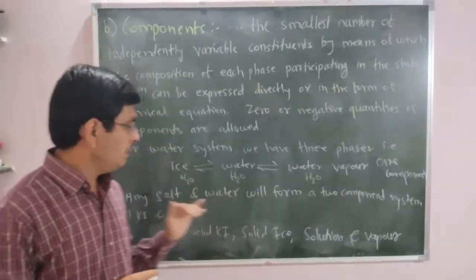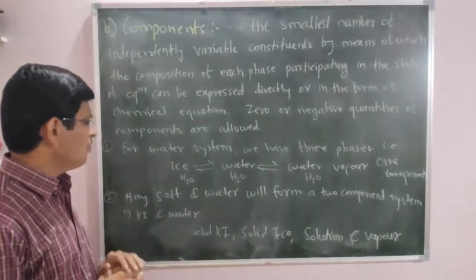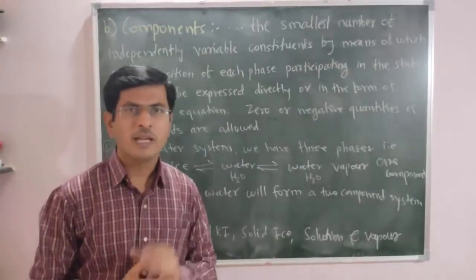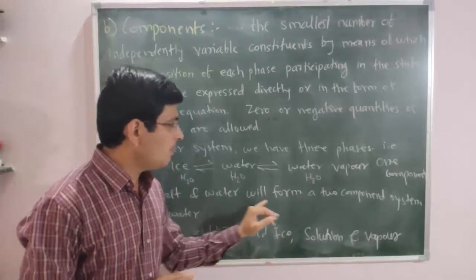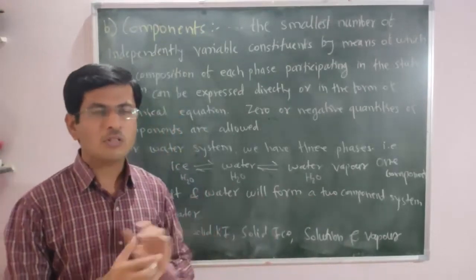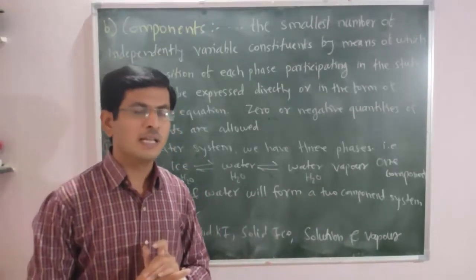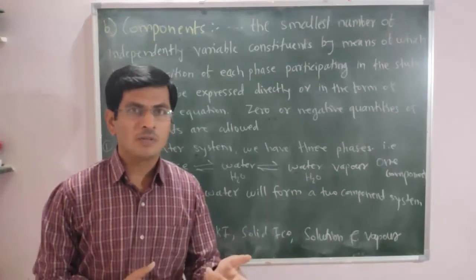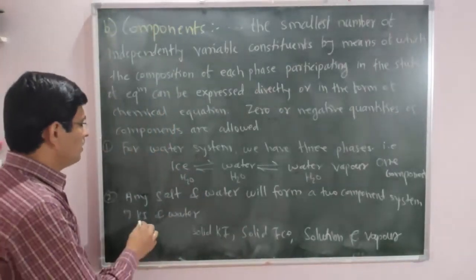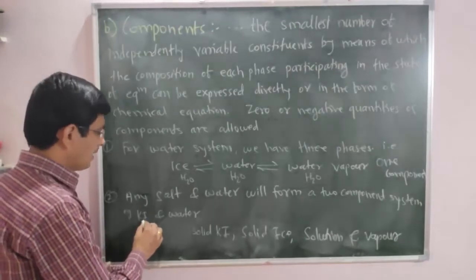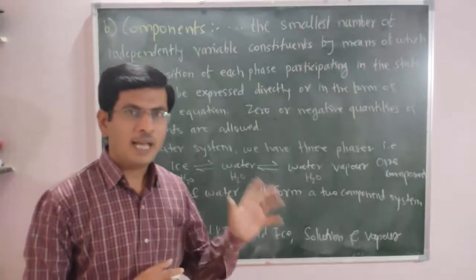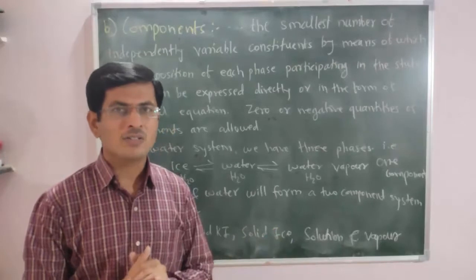The second example: if we consider any salt and water, they will form a two-component system. Consider KCl and water system. If we consider KCl and water system, we take H2O as one constituent.